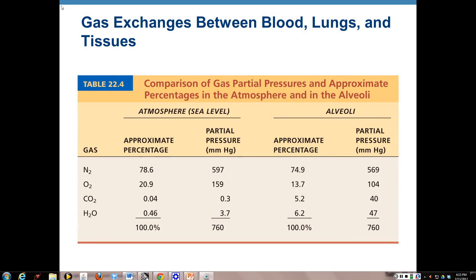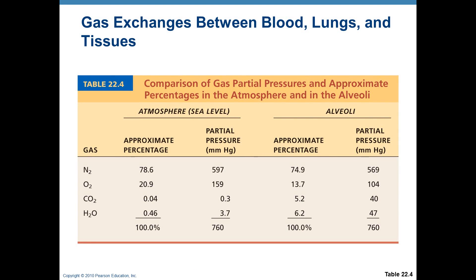The next topic for the respiratory system is gas exchange between the blood and the lungs, and between the blood and your tissues. Things may start looking scary in your textbook but it's not quite as scary as it needs to look. The first thing you need to know is that air is a mixture of different gases — nitrogen, oxygen, carbon dioxide, and water vapor. The two gases we're most concerned with for respiration are O2 and CO2.